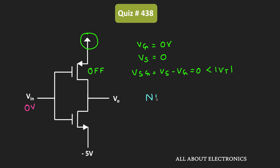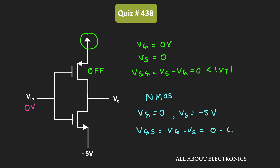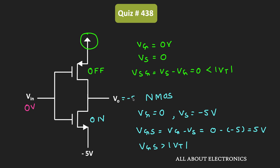For the NMOS transistor, the gate voltage is also equal to 0, but the source voltage is equal to minus 5V. That means VGS, which is VG minus VS, is equal to 0 minus (minus 5V), that is equal to 5V. Since VGS is more than the threshold voltage, this NMOS transistor will remain in the ON condition. Whenever the input is 0, the NMOS transistor is ON, it acts as a short circuit, and due to that the output voltage will be close to minus 5V.